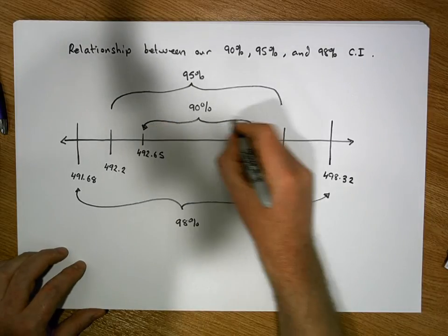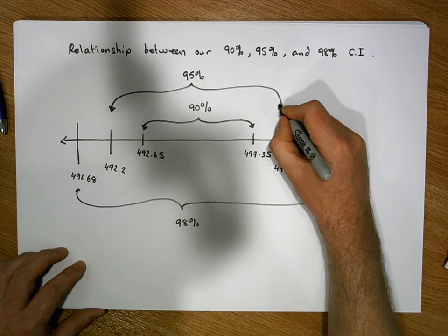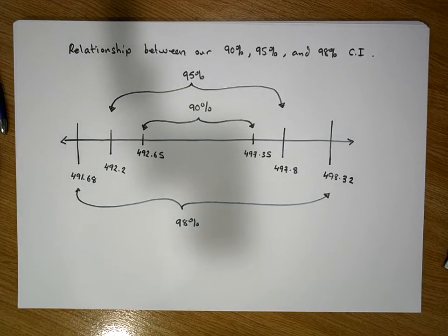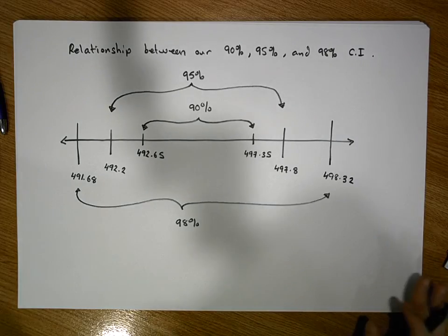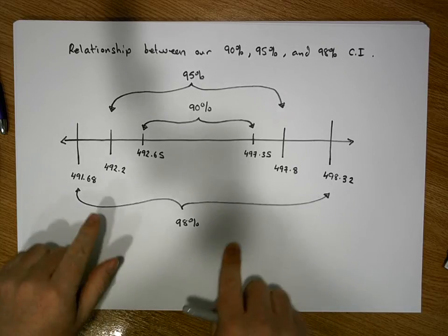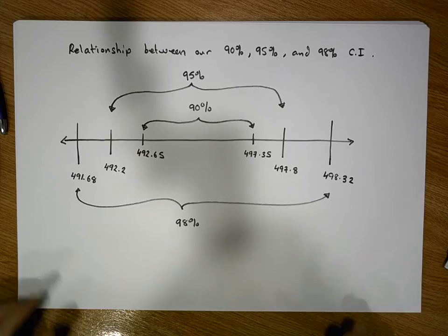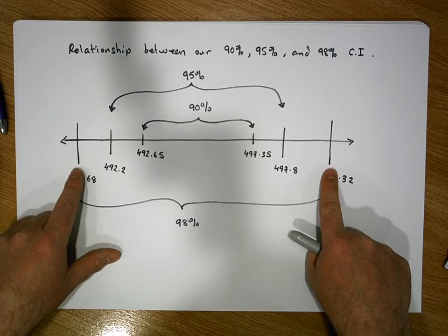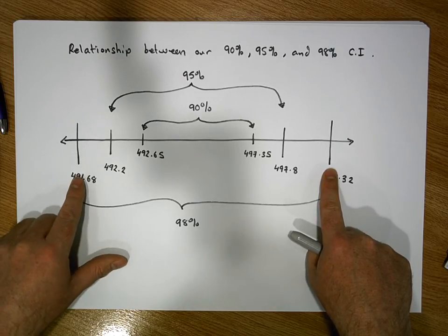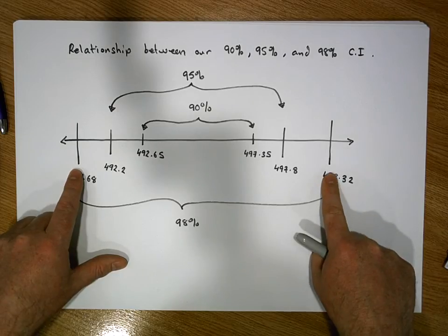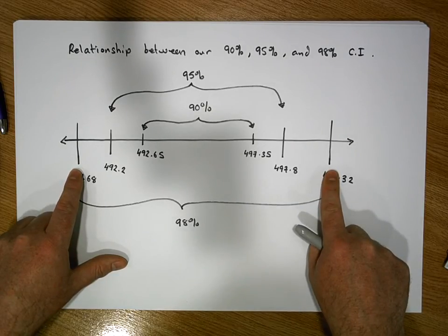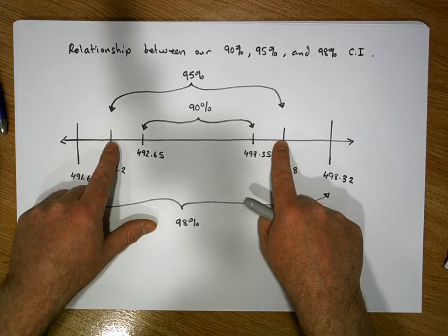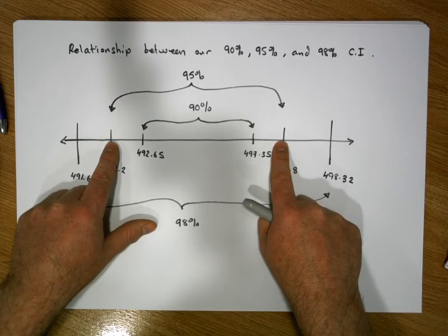So the 90% interval is the narrowest, the 95% is next, and the 98% is the widest. The more confident we want to be about where the true population mean resides, the wider the interval. When we reduce the confidence level, we can see that we're zoning in closer to where the actual population mean would reside, so the intervals get smaller.